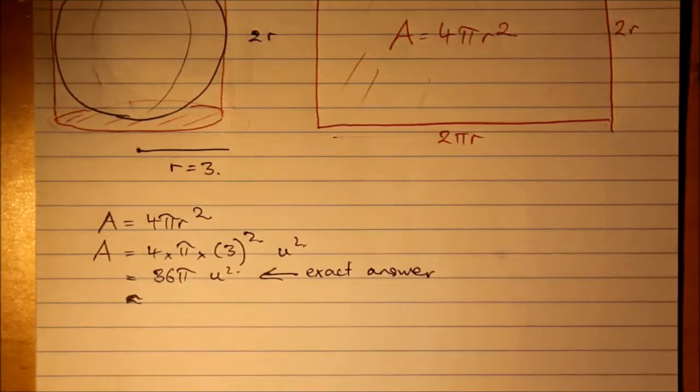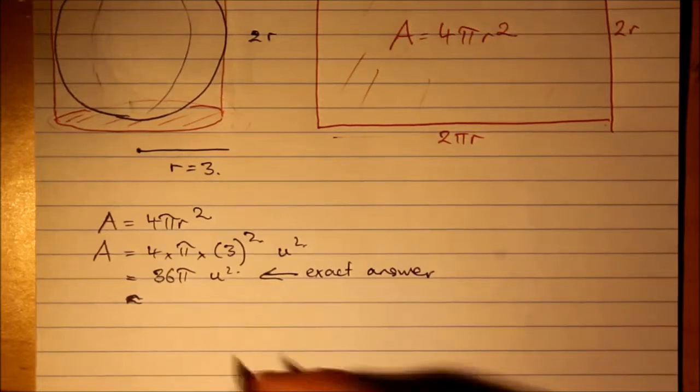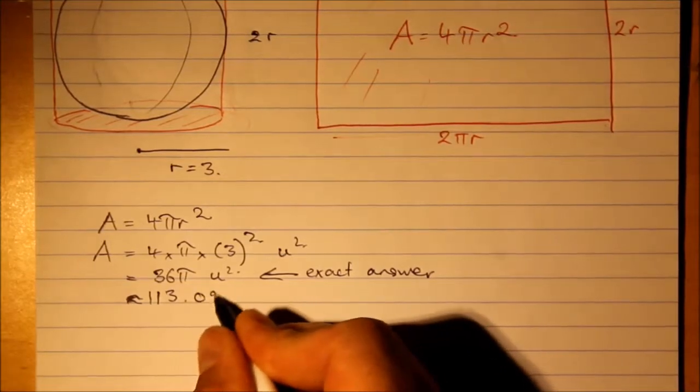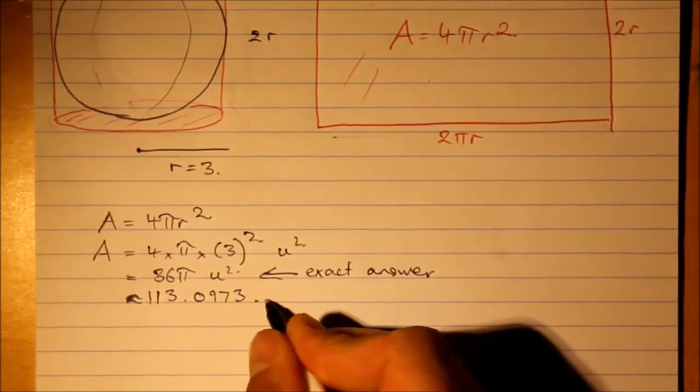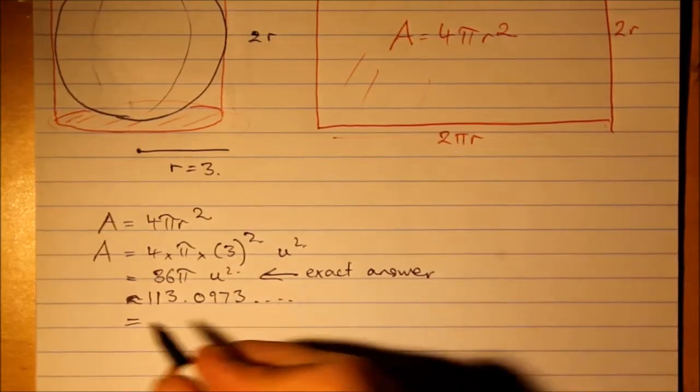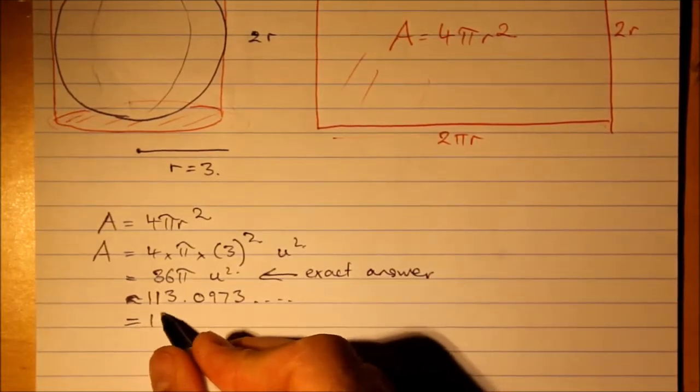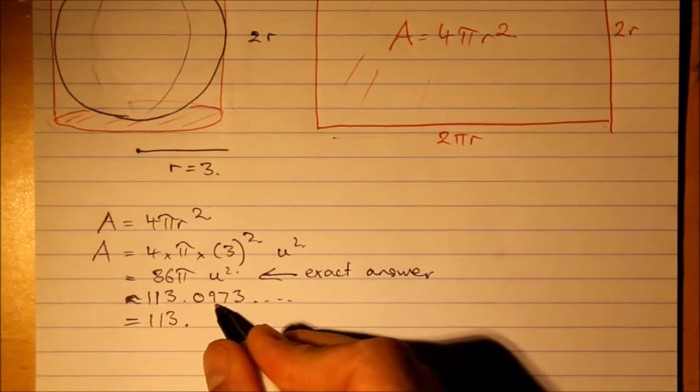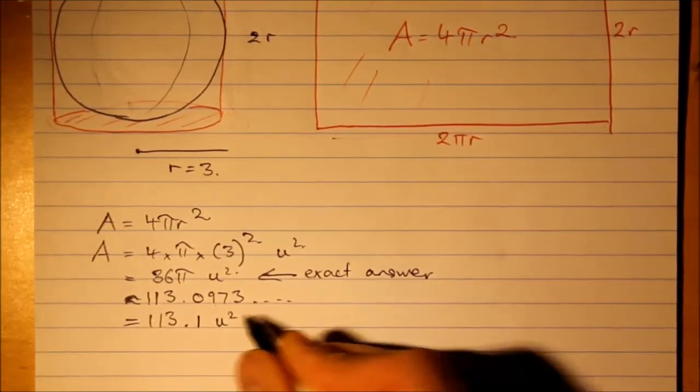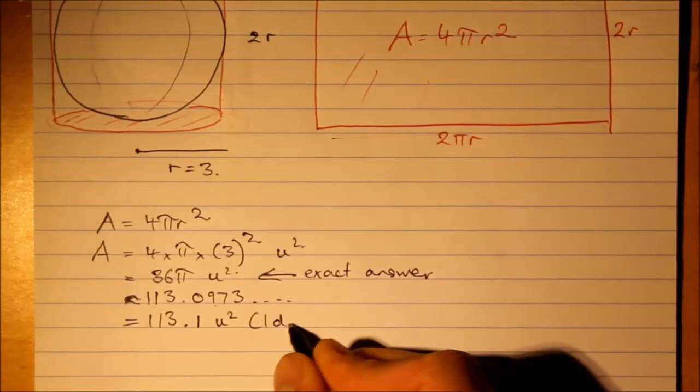36 times π. 113.0973. And let's put this to one decimal place. The 9 makes that close to 1. 113.1 unit squared to one decimal place.